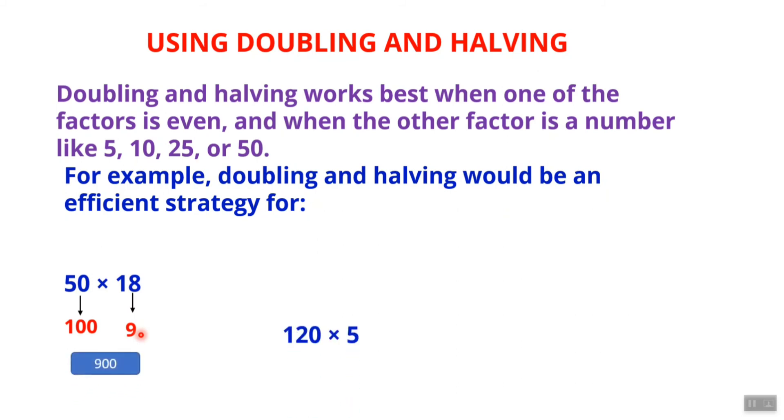Let's take another example: 120 times 5. We can take half of 120, which is 60, and double 5 to get 10. So 60 times 10 equals 600. It's easier to solve.